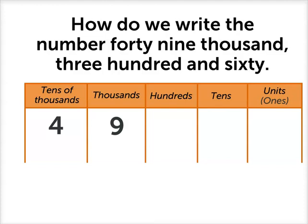Now let's write 360. Three hundreds, six tens, and no units. Notice that all my columns in the place value table now have a number or digit written in them.